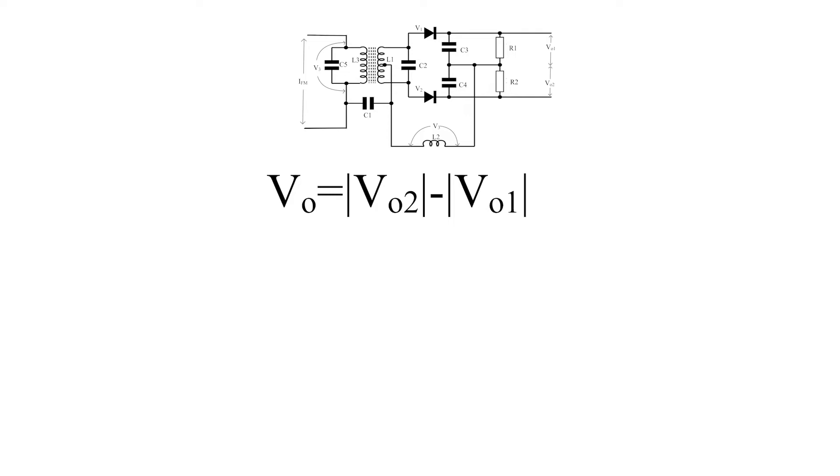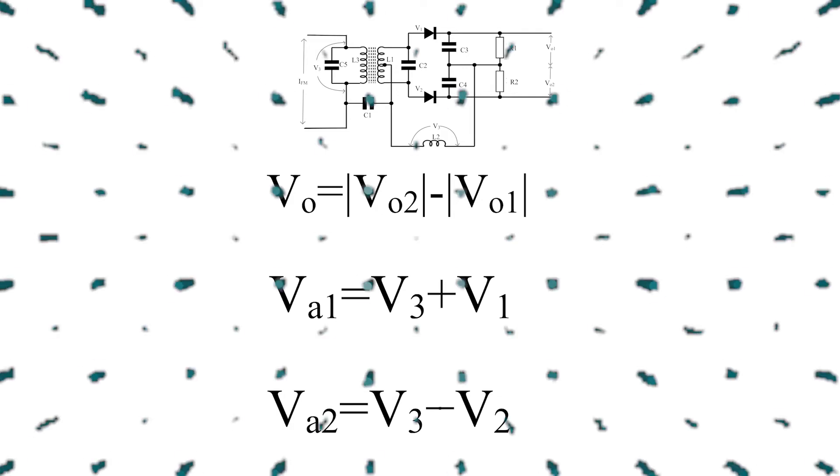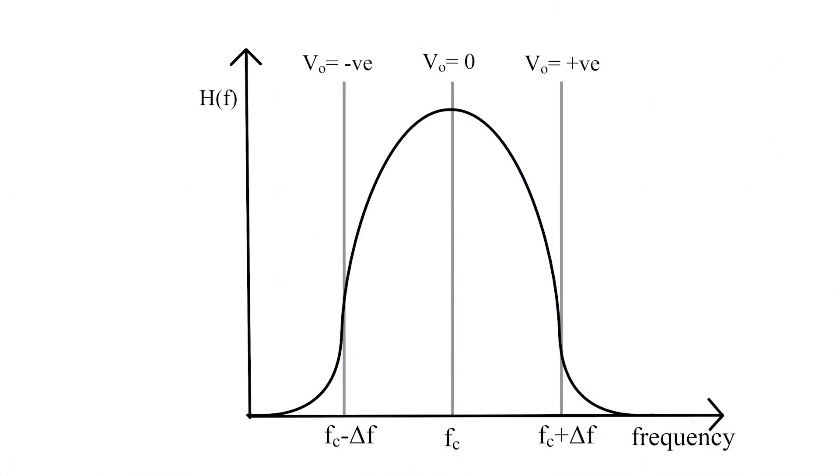This gives rise to three cases. Now let's take a look at the characteristic response of the tuned amplifier. We can see the center tuned frequency fc, the upper band fc plus delta f, and the lower band fc minus delta f.